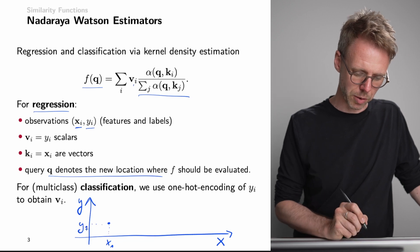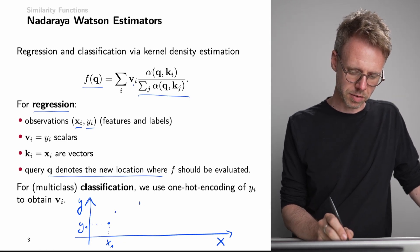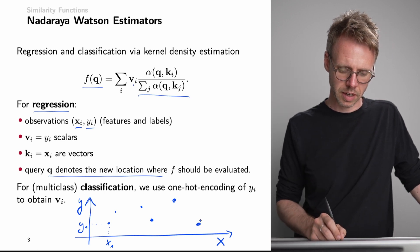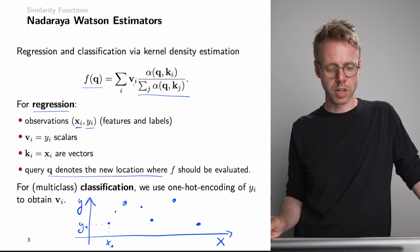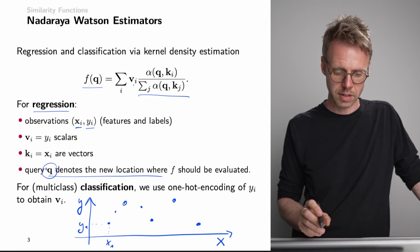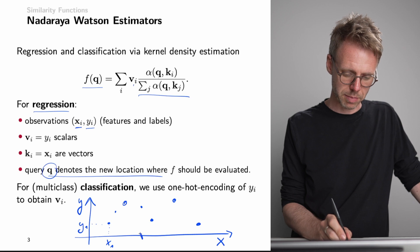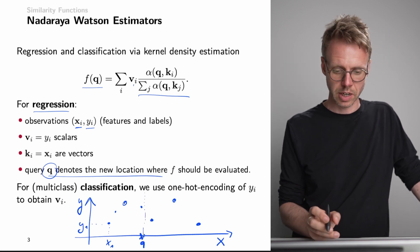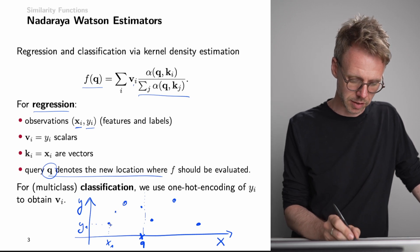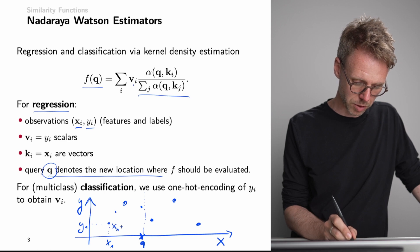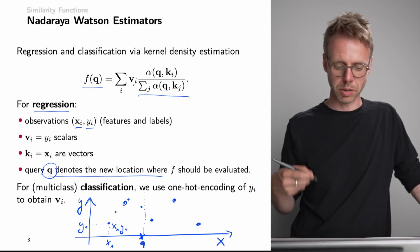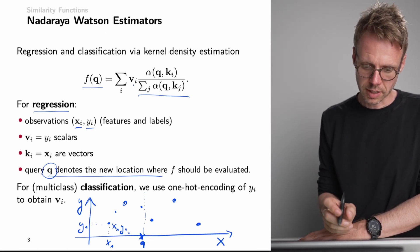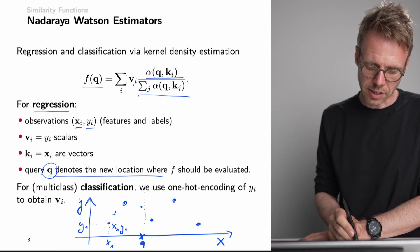For example, we have x1 and y1, and we might have additional data points. We place a query somewhere — for example, this would be q. We are now computing, for each of those x_i's — x1, y1; x2, y2; x3, y3; x4, y4; up to xn, yn — the kernel alpha for this query and all of our data points.